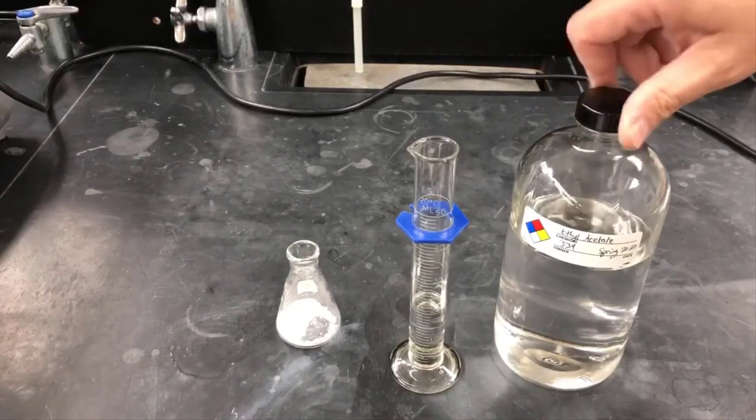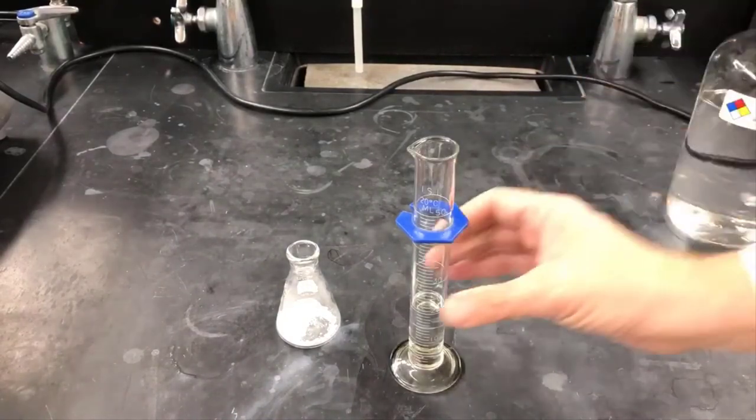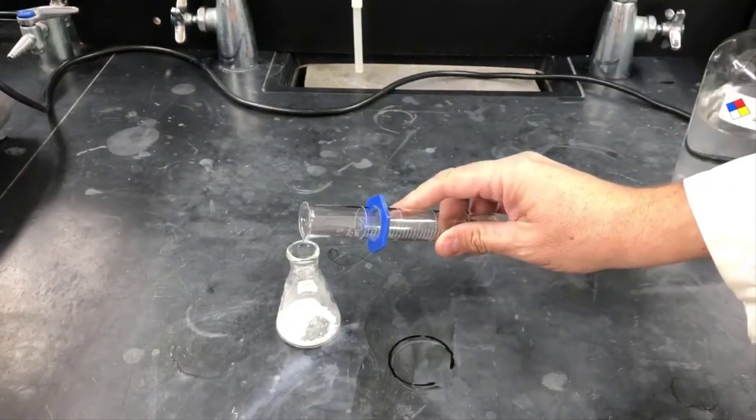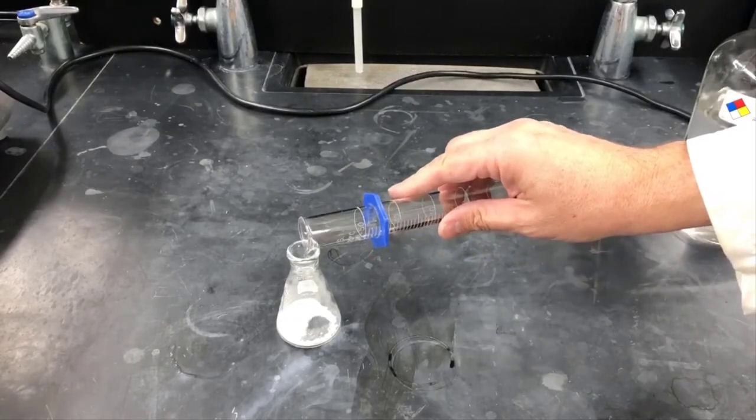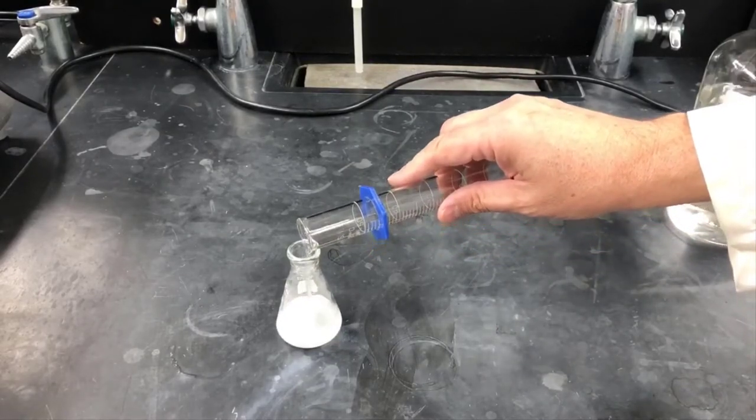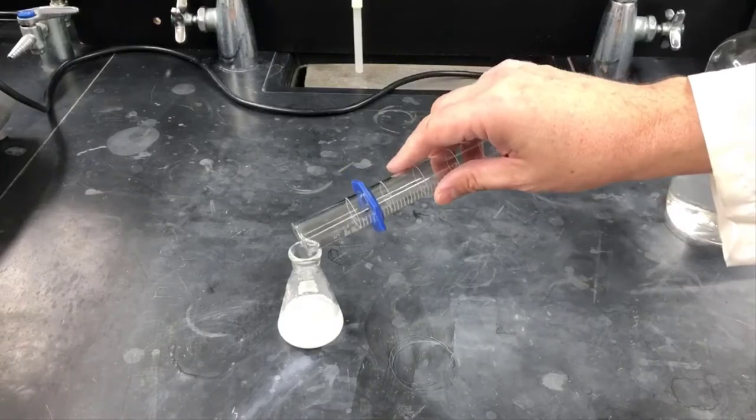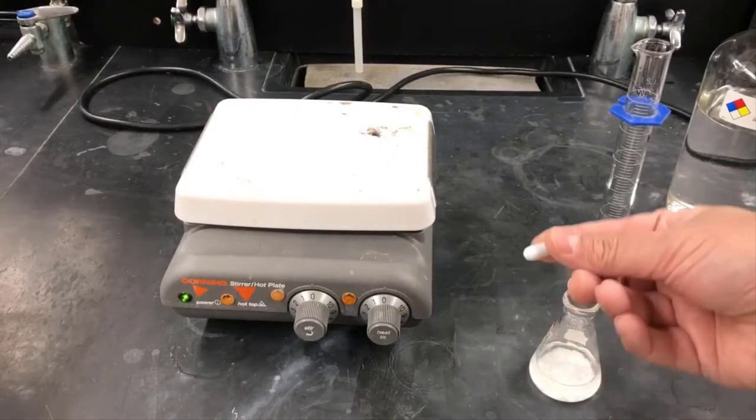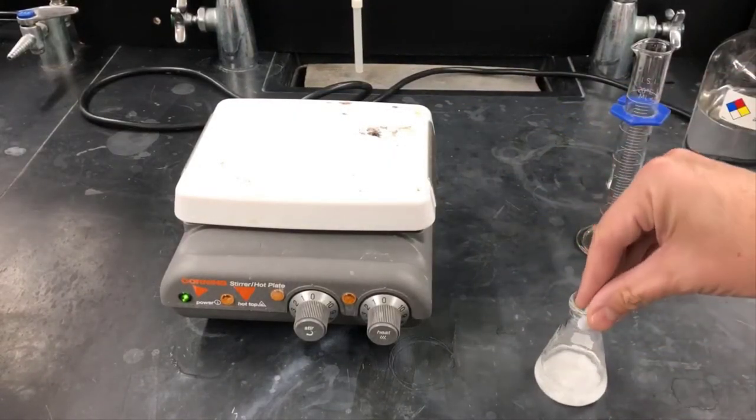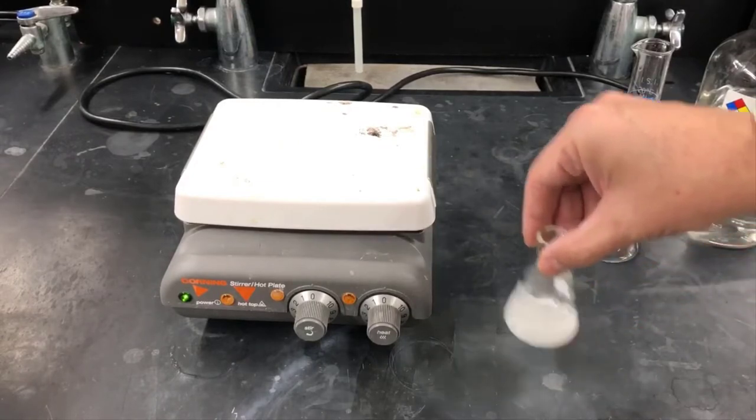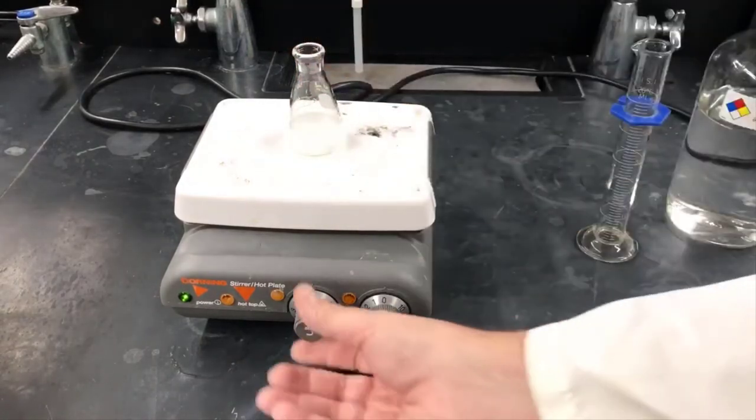Here I'm measuring out 20ml of ethyl acetate and I'll add it to the Erlenmeyer flask. Ethyl acetate is pretty volatile and you can get a sense of that by looking at how fast that ring evaporated from underneath the graduated cylinder. Now I'm adding a magnetic stir bar and I'm going to put it on the hot plate, get it stirring, and turn the heat on to get the ethyl acetate hot and boiling.